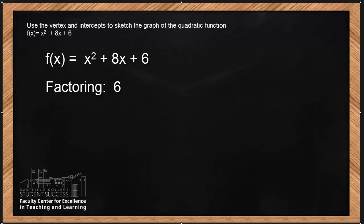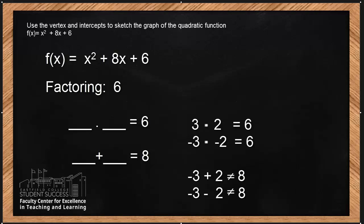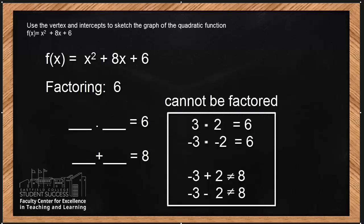Let's see if this problem can be factored. How many different ways can we multiply our integers and get 6? Well, that's 3 times 2, or negative 3 times negative 2. If I combine like terms, 3 plus 2 is 5, and negative 3 minus 2 is negative 5 — none of these possibilities will give us a sum of 8. So this problem cannot be factored; hence I'm going to use the quadratic formula.